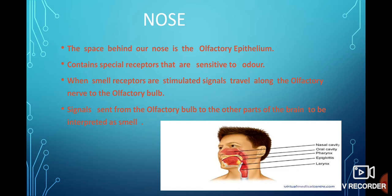So what are the features of nose? The space behind our nose is known as olfactory epithelium. Contains special receptors which are sensitive to odor. Odor means smell. When smell receptors are stimulated, signals travel along the olfactory nerve to the olfactory bulb. Then signals send from the olfactory bulb to the other parts of the brain and then your brain interprets the smell and it can detect what kind of smell it is. Interpret means understand.